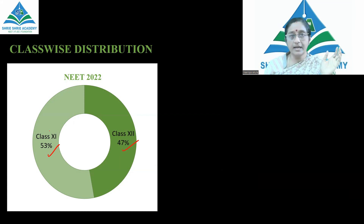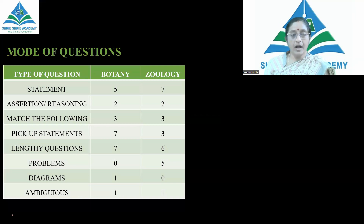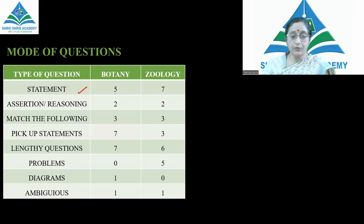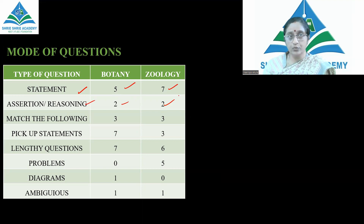Coming to the mode of questions: statement type questions — 5 related to botany and 7 related to zoology. Assertion and reasoning — 2 each for botany and zoology. Match the following — 3 for botany and 3 for zoology.